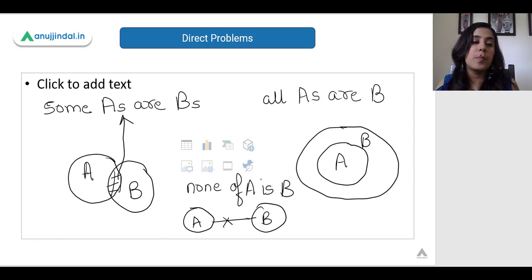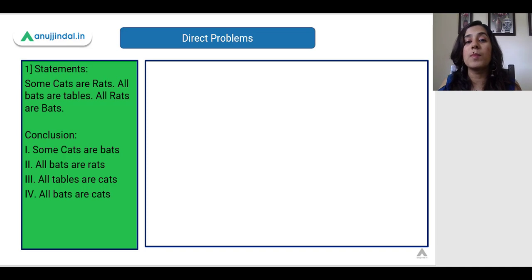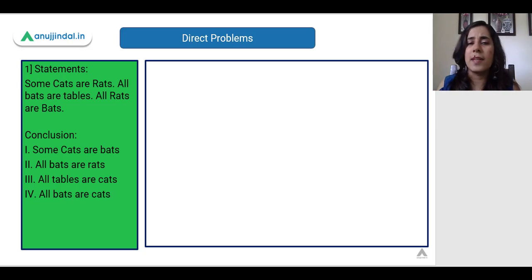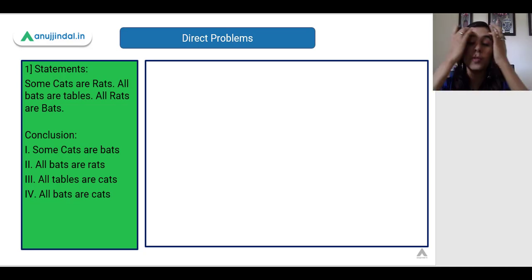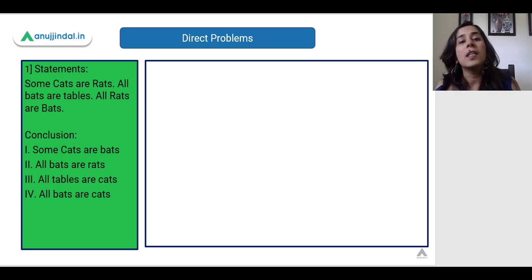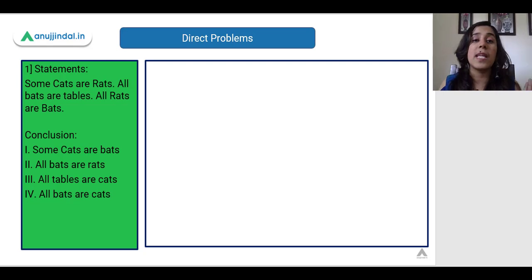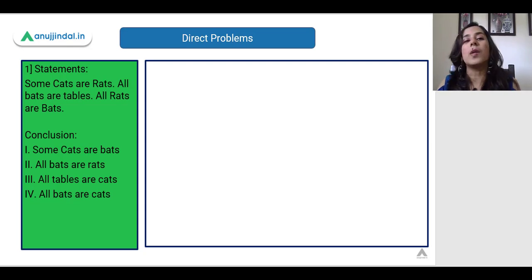I have divided the problems into two categories. The first is direct problems — very simple, requiring just a few seconds to get the answer. The second category is a bit trickier, wherein you need to use pen and paper and it takes a few minutes to reach the conclusion. Difficult problems typically come in the data interpretation part of the exam, with a case and three or four sub-questions. Let's get started with the simpler ones from the logical reasoning part.